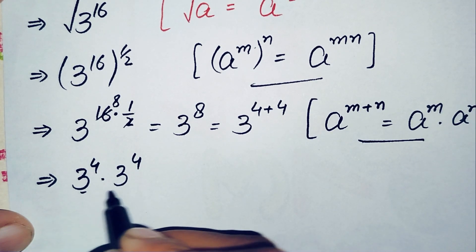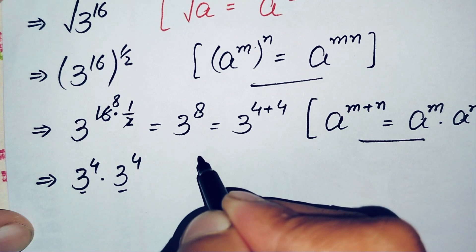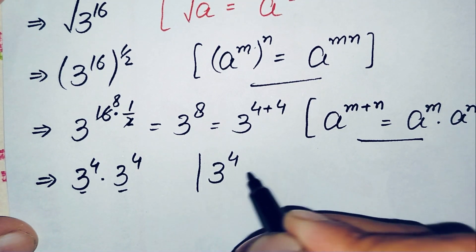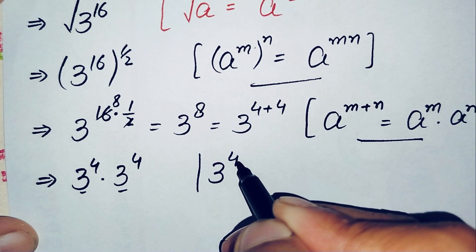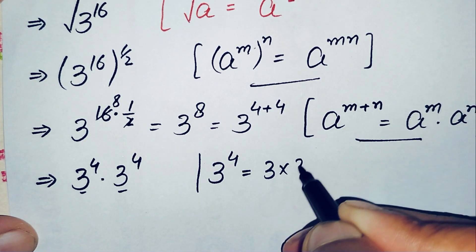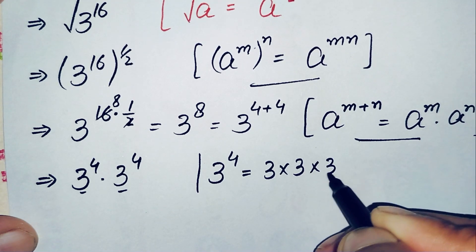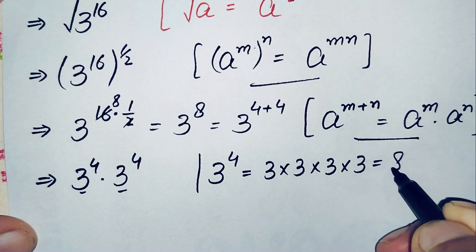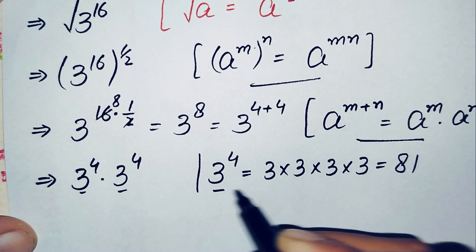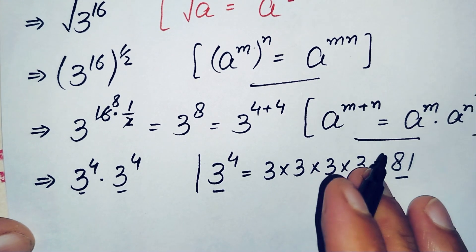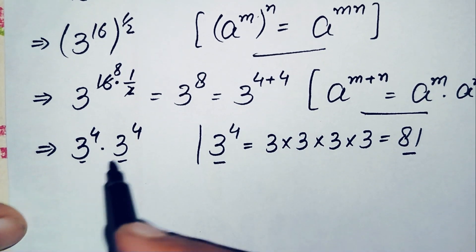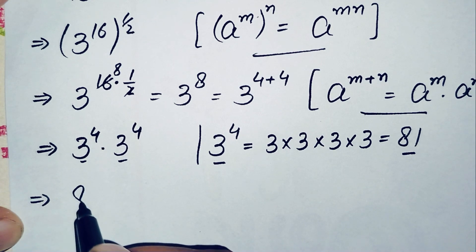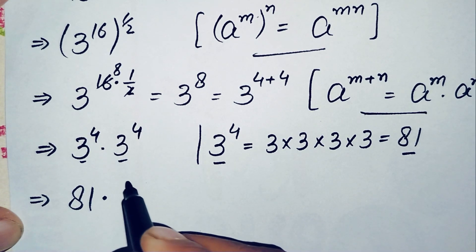Now we find the value of 3 raised to power 4. We need to multiply 3 four times: 3 times 3 is 9, 9 times 3 is 27, and 27 times 3 is 81. So the value of 3 raised to power 4 is 81. We will replace both occurrences of 3 raised to power 4 with 81, giving us 81 times 81.